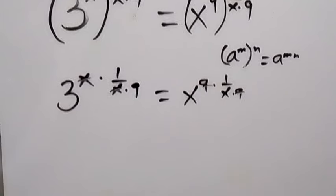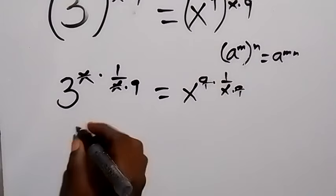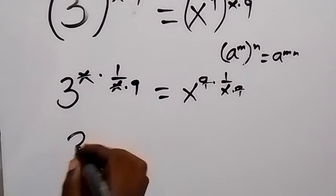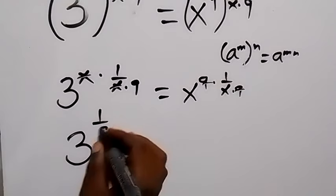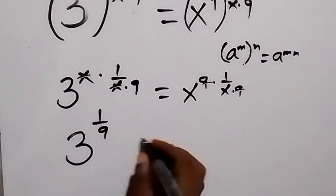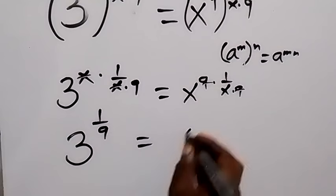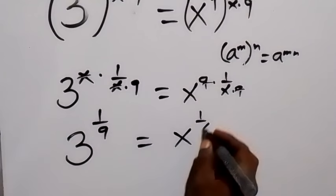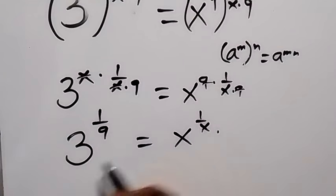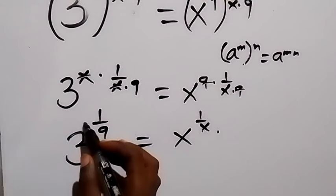What is left here is 3 raised to power 1 over 9, which equals x raised to power 1 over x.